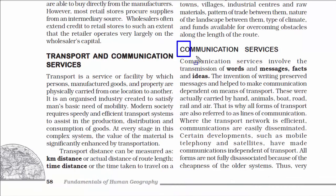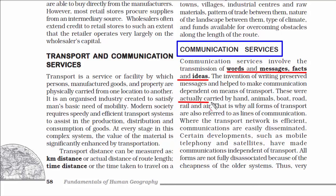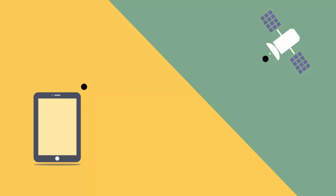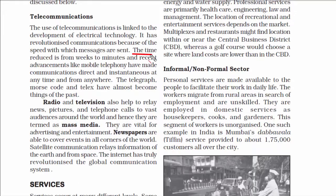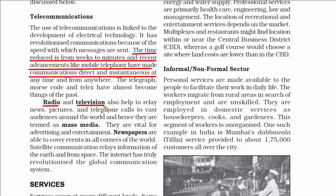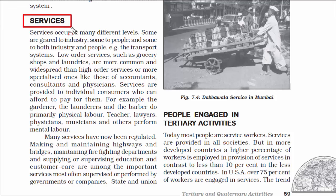Next is communication services. Traditionally, hands, animals, boats, roads, rail, and air were used to deliver messages — these are called lines of communication, meaning communication was dependent on transportation. But today, with mobile phones, telephones, and satellites, communication is independent of transport — you can send a quick message, picture, or video without any traditional transport medium. Communication services include radio, television, newspaper, telephone, internet, mass media, etc.